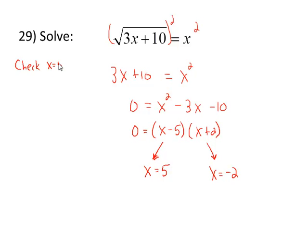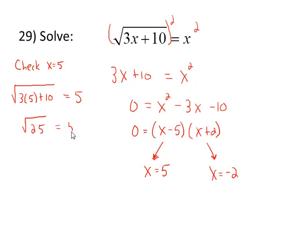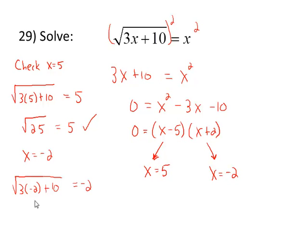Remember the 5-second rule: if you can't factor within 5 seconds, move on to the quadratic formula — you'll get the same solutions. Our potential solutions are x equals 5 from the first factor and x equals negative 2 from the second. We do want to go back and check our solutions in the original equation. If I check 5, I have the square root of 3 times 5 plus 10 equal to 5 — the radicand is 25, the square root of 25 is 5, so that one works. When I check x equals negative 2, I get the square root of 3 times negative 2 plus 10 equals negative 2. The radicand is 4, but the square root of 4 does not equal negative 2, so we throw out that solution as extraneous. Our solution set simply contains 5.